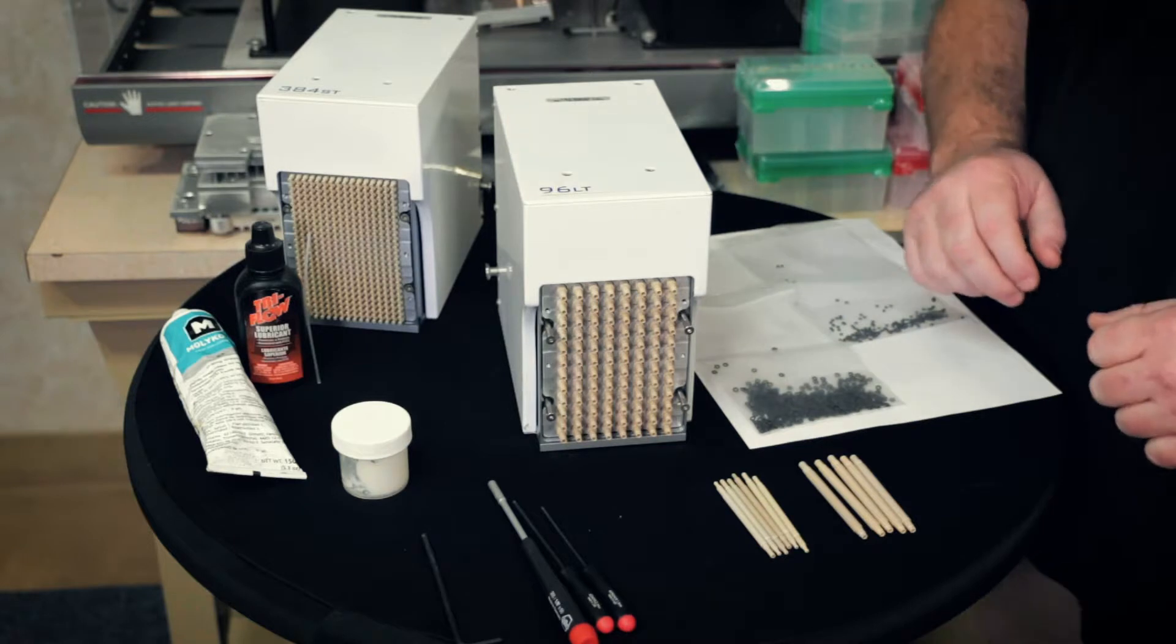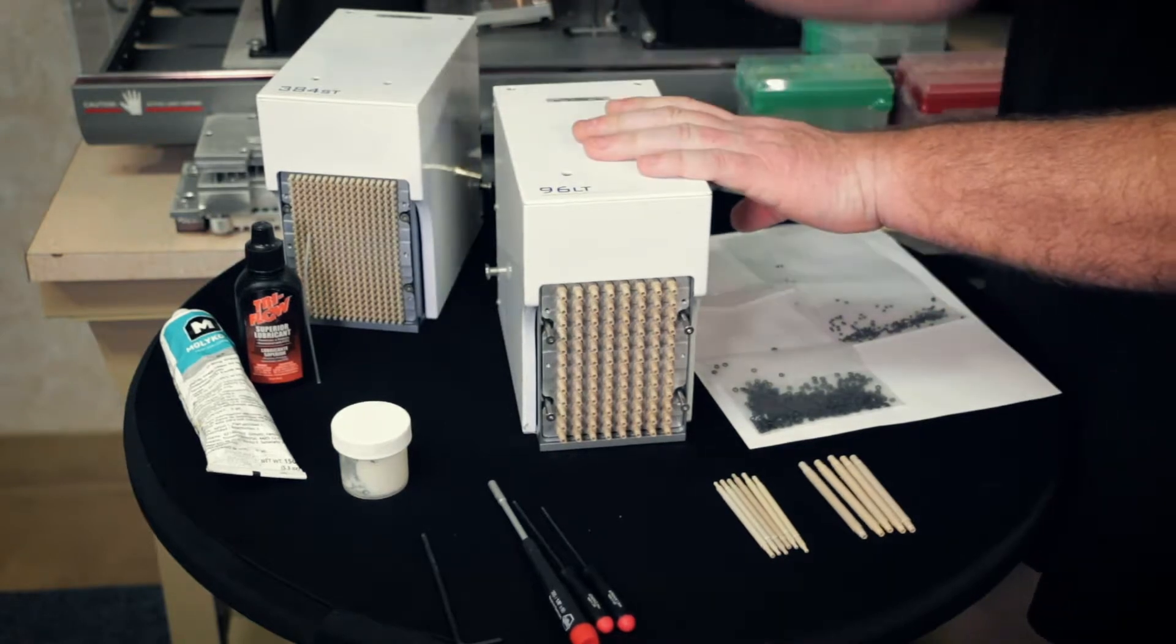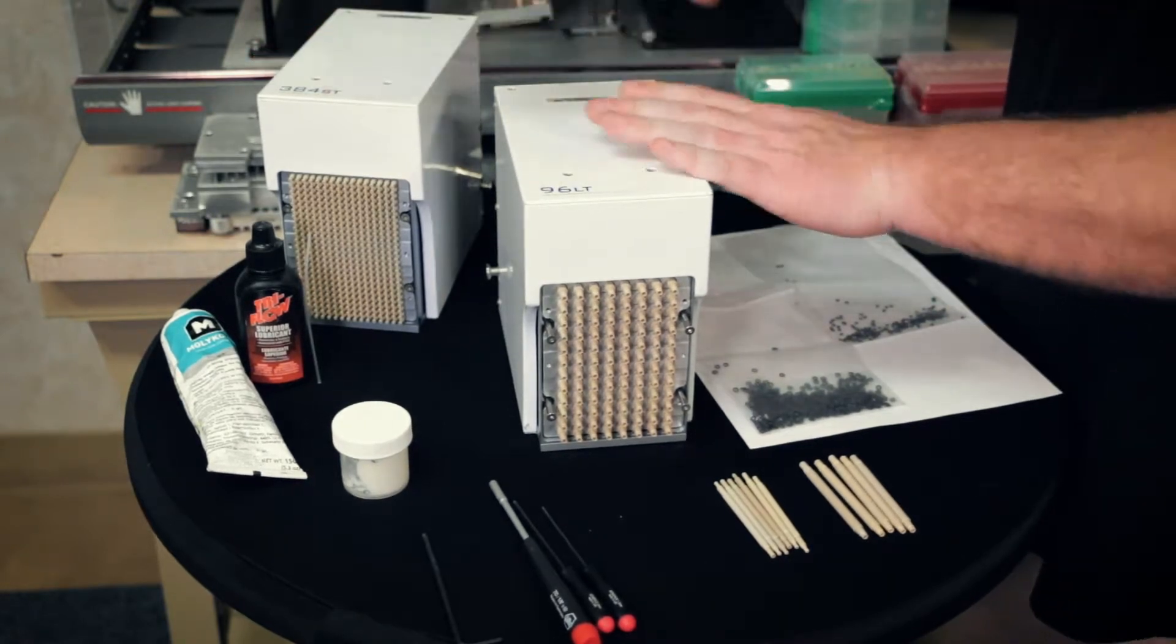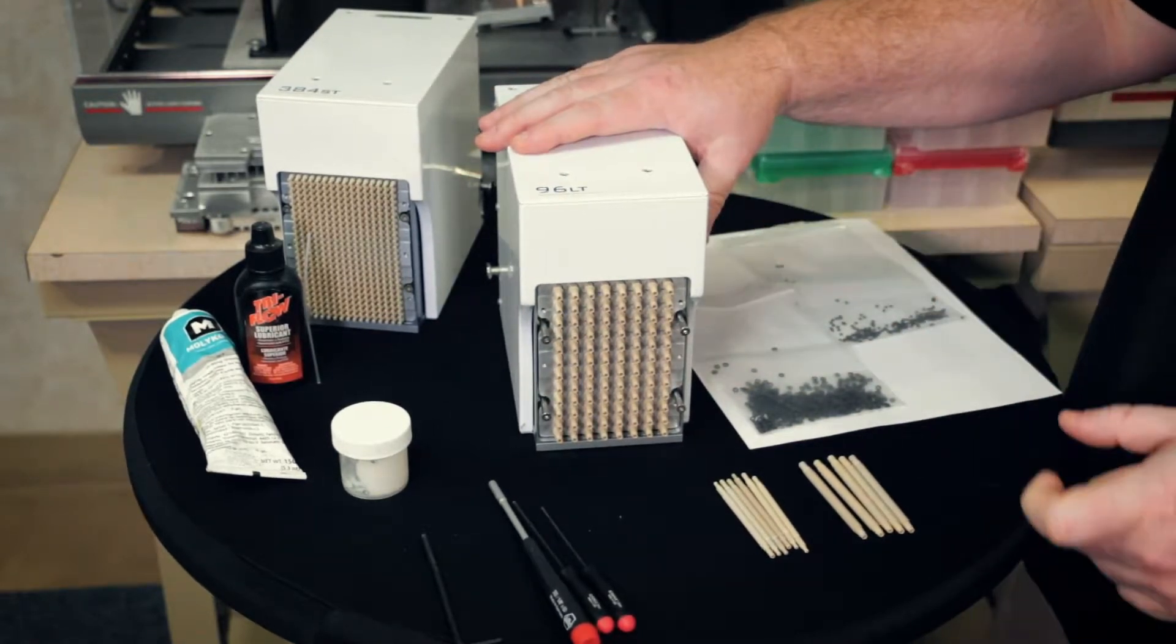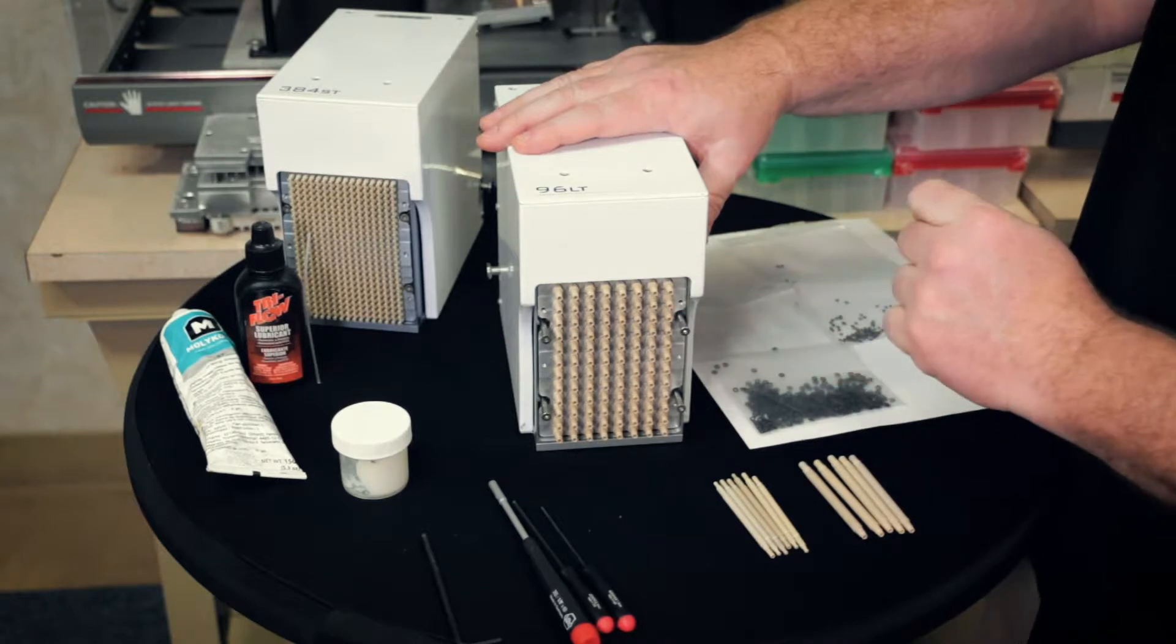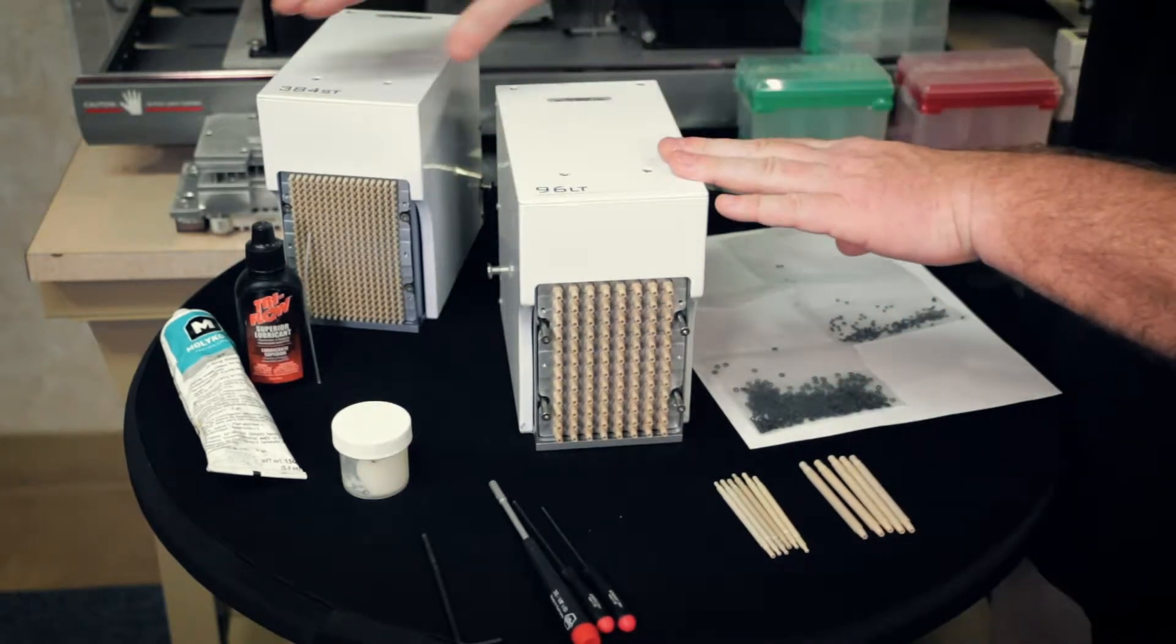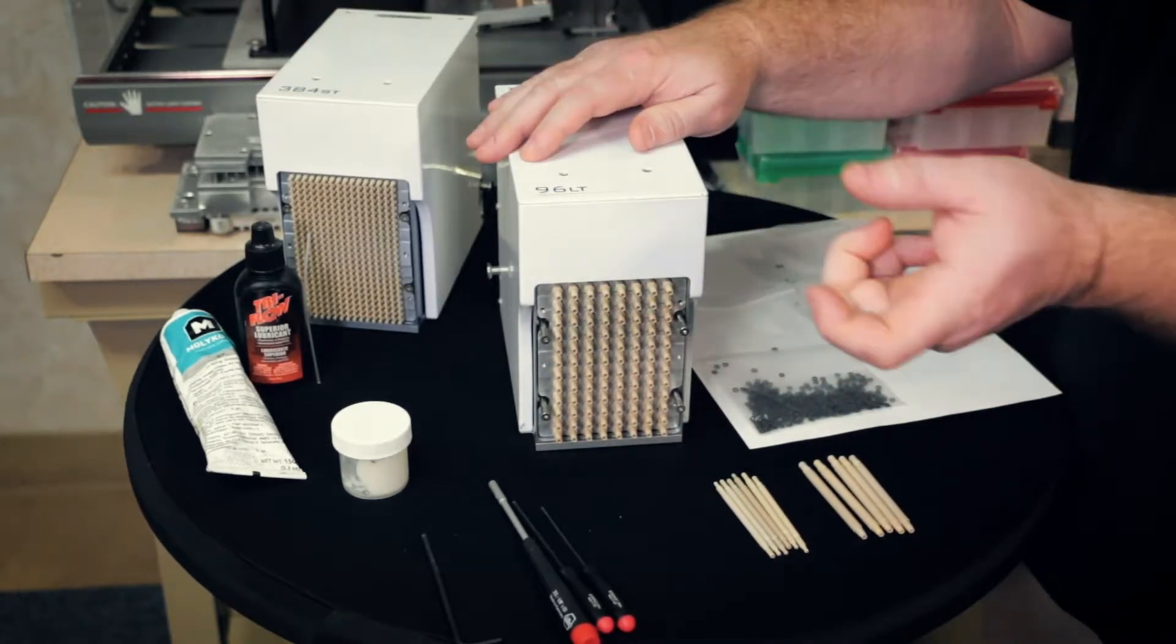So there's two main types of heads. You have the 96 channel head and the 384 head. There's two versions of 96 head you want to be aware of: the LT, which is a large volume tip with a bigger barrel, and then the ST, which are on the 384s, which is a smaller volume tip.